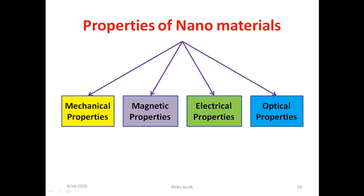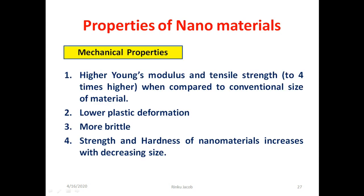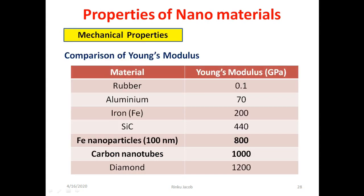We now discuss the properties of nanomaterials, classified into four categories: mechanical, magnetic, electrical, and optical. Regarding mechanical properties, nanomaterials have higher Young's modulus and tensile strength up to 4 times higher compared to bulk size. They show lower plastic deformation, are more brittle, and strength and hardness increase with decreasing size. For example, iron has a Young's modulus of 200 GPa, but iron nanoparticles of 100 nm show 800 GPa — nearly 4 times higher. Carbon nanotubes show Young's modulus close to that of diamond.